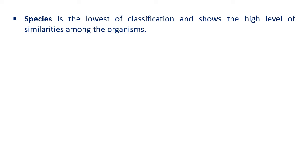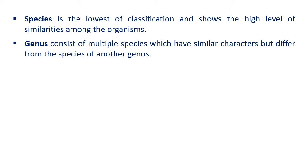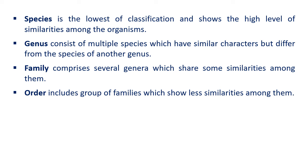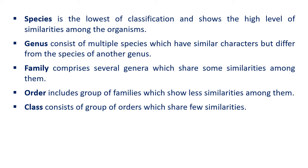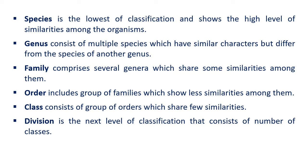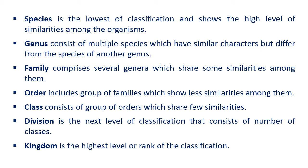Species is the lowest level of classification and shows the highest level of similarities among organisms. Genus consists of multiple species with similar characters but differing from species of another genus. Family comprises several genera sharing some similarities. Order includes groups of families showing less similarity. Class consists of groups of orders sharing few similarities. Division consists of a number of classes, and Kingdom is the highest level or rank of the classification system.